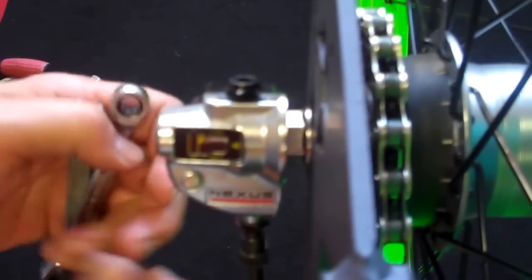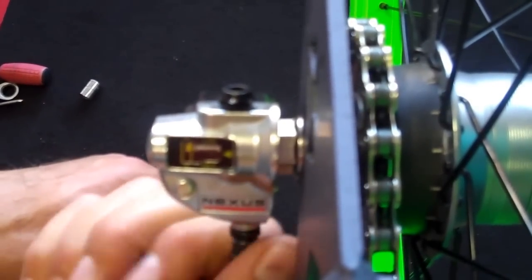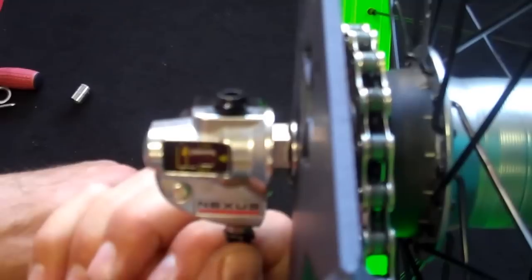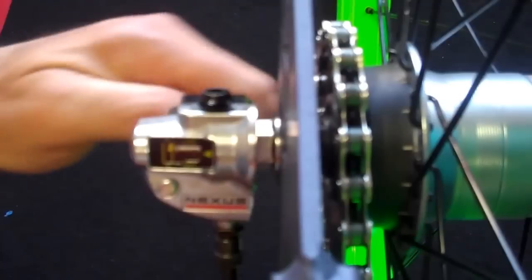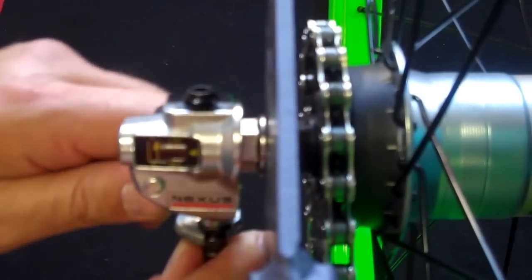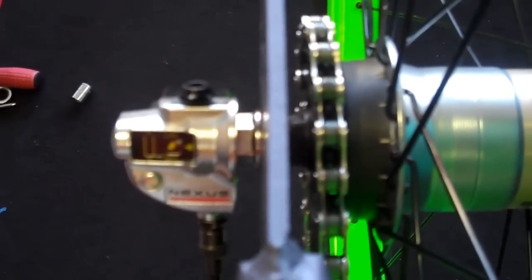Loosen your retaining bolt here and adjust this so it's directly in the middle of those two yellow guidelines. Then tighten your retaining locking bolt up here so the cable doesn't move, and you're good to go.